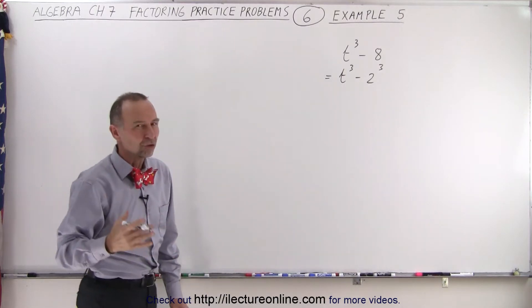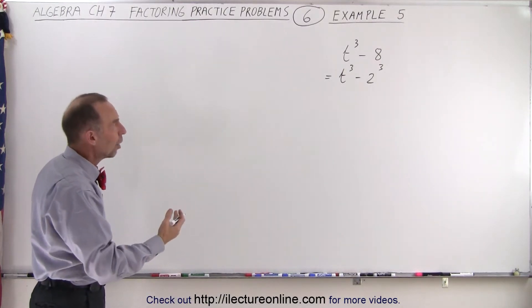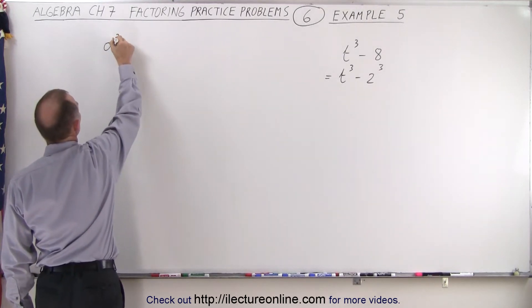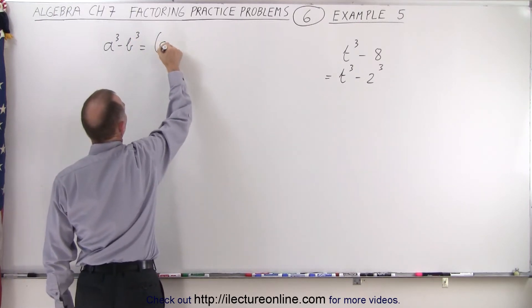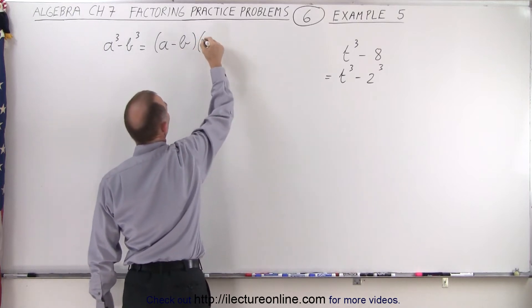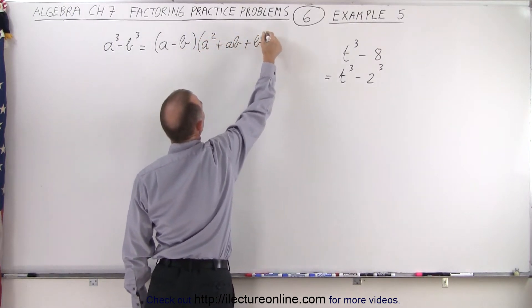And then you have to remember the general formula or the general format of the difference of cubes. So when we have a cubed minus b cubed, this can be factored as a minus b. That's the only place you have a negative sign. And then we have a squared plus ab plus b squared.